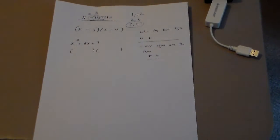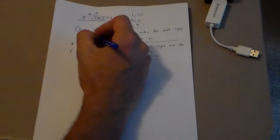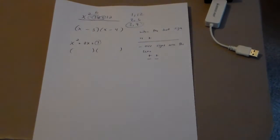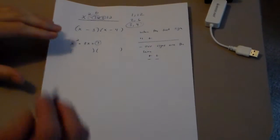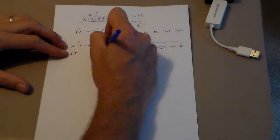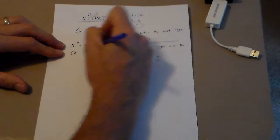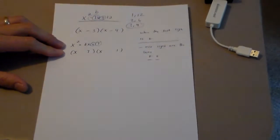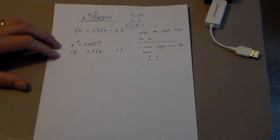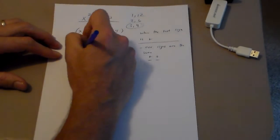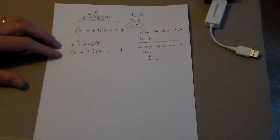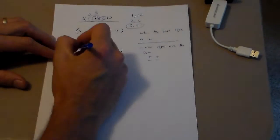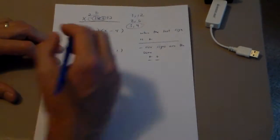This next one is easy. Seven is prime, which means it has exactly two factors: 1 and itself. So I put my x's in, and 7 and 1. The sign is positive, so the signs are the same — that's positive, that's positive — so they're both positive.